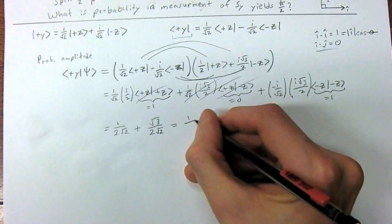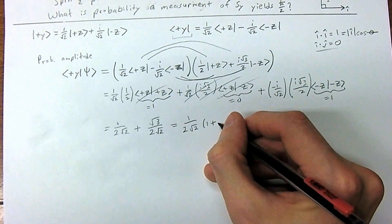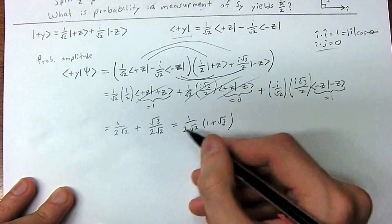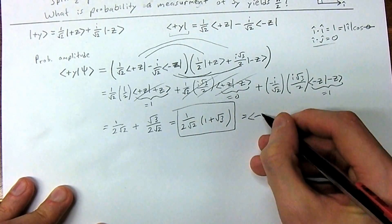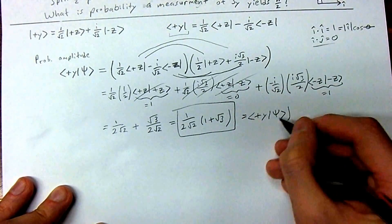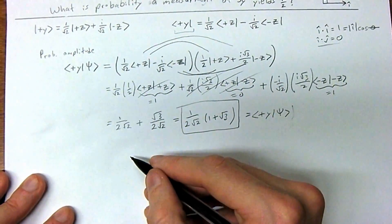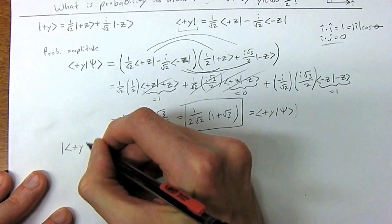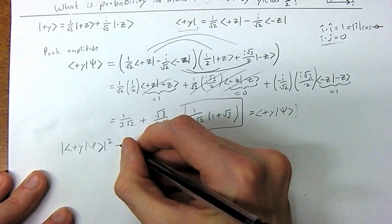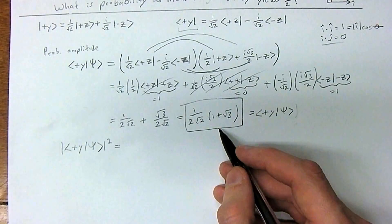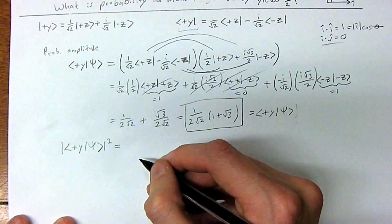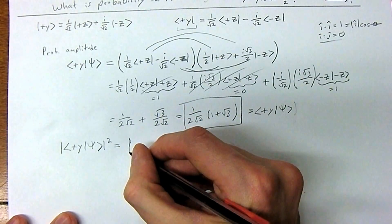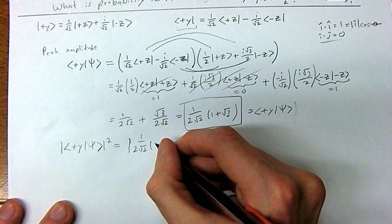We can simplify this. We have 1 over 2√2, times (1 + √3). So the probability amplitude ⟨+y|ψ⟩ equals (1/(2√2))(1 + √3). Now we're going to actually find the probability, and to do that we multiply this by its complex conjugate.